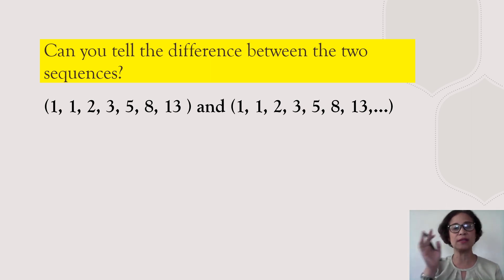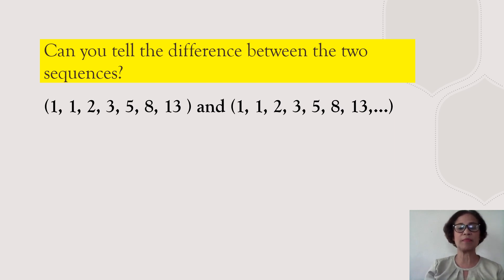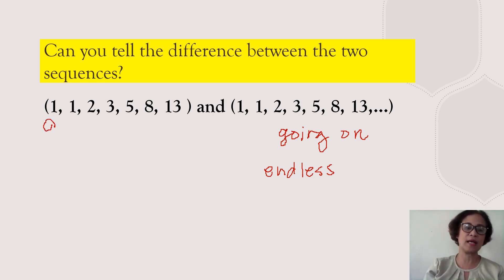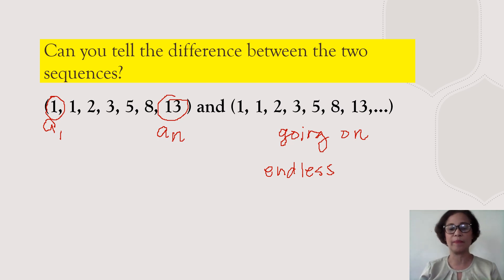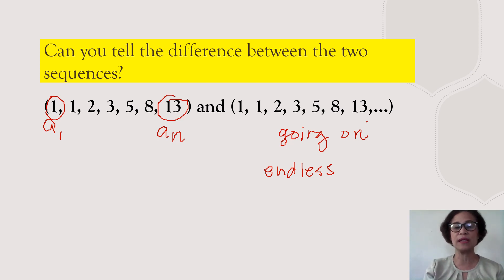Can you tell the difference between these two examples of sequences? The first one is 1, 1, 2, 3, 5, 8, 13 — and the next sequence is 1, 1, 2, 3, 5, 8, 13, and so on. The right one is going on, meaning it won't end — it's endless. The left side has an a sub 1 and ends at 13, so we have an a sub n. The left one ends at 13; the right example doesn't end because of the ellipsis symbol, meaning it goes on and so on.